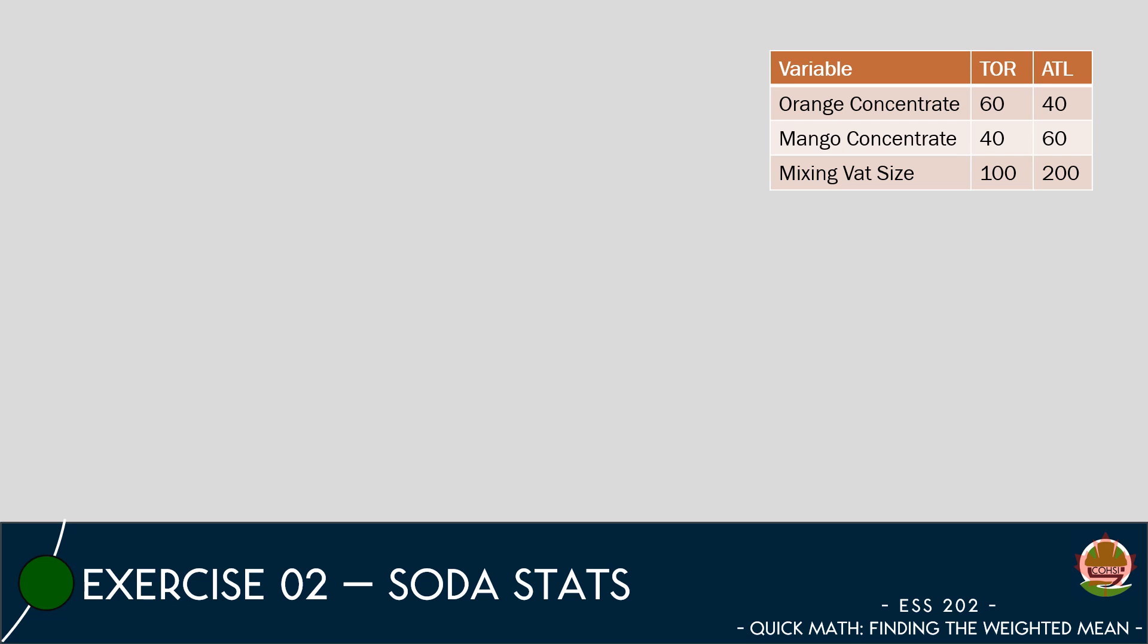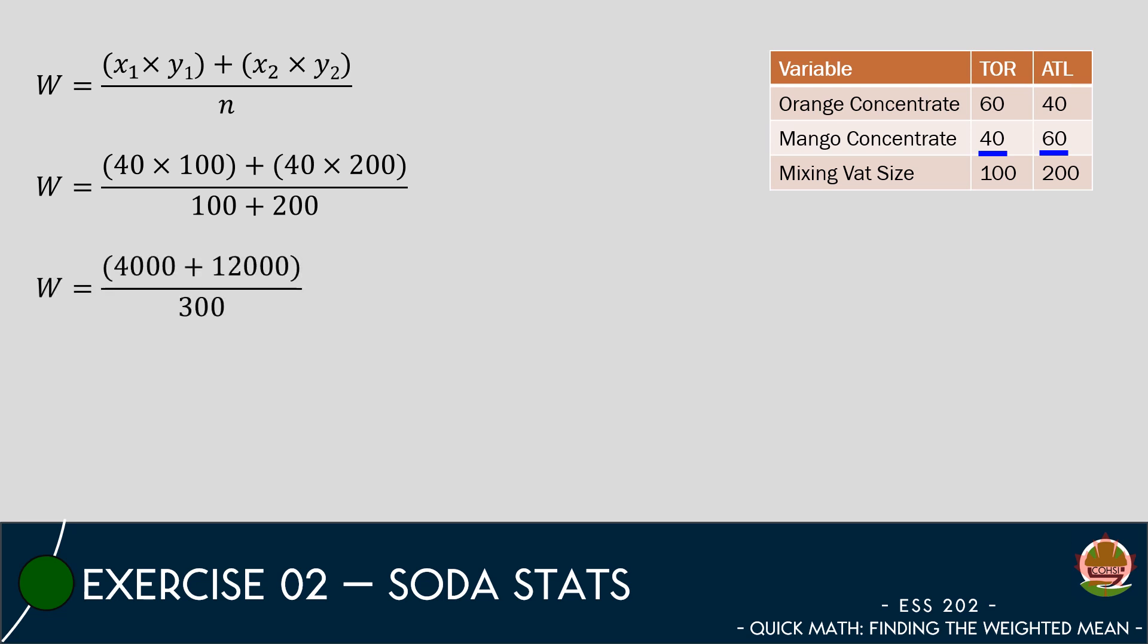We now will calculate the weighted mean of mango juice in both mixing vats. We know that the factory in Toronto uses a 40% mango juice ratio, while the factory in Atlanta uses a 60% mango juice ratio. We will first multiply the juice ratios together and combine the vat sizes. We divide the two numbers together to get a weighted mean of 53.33 for the mango juice concentration.